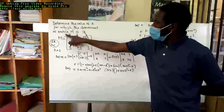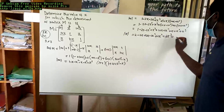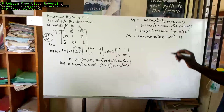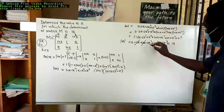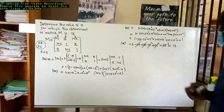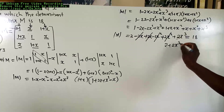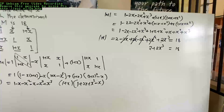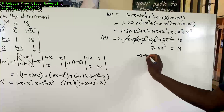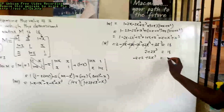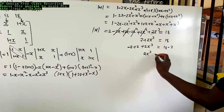Remember we are supposed to get the value of X for which the determinant of matrix M is 18. So the determinant of M is equated to 18. The positive and negative 2X terms cancel out, and the negative and positive 2X squared terms cancel out. What we remain with is 2 plus 2X cubed equated to 18. Put like terms together: subtract 2 from both sides, so 2X cubed equals 18 minus 2, which equals 16.